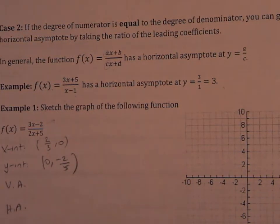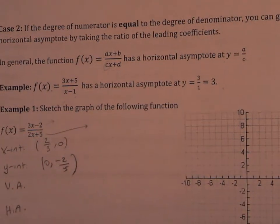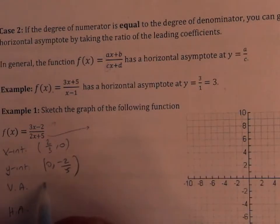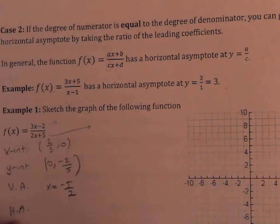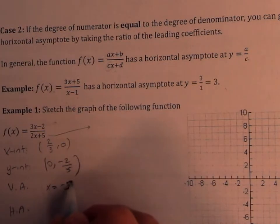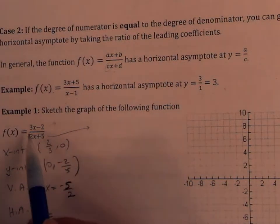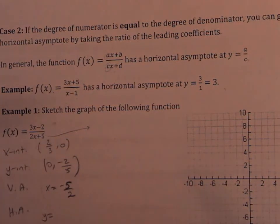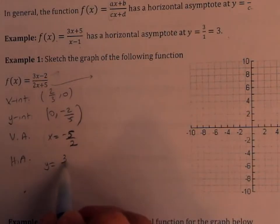For the vertical asymptote, you take the zeros of the denominator. Setting 2x plus 5 equals 0 gives you x equals negative 5 over 2. For the horizontal asymptote, degree 1 over degree 1 — same degree — so you take the ratio of the leading coefficients and get 3 over 2.